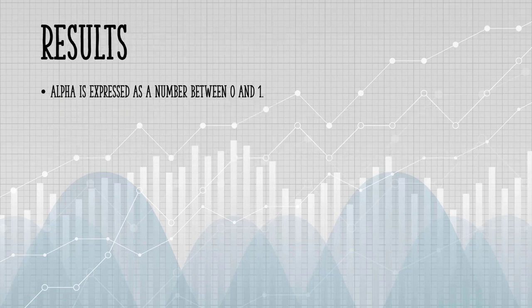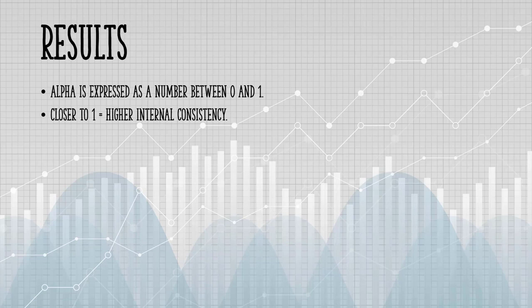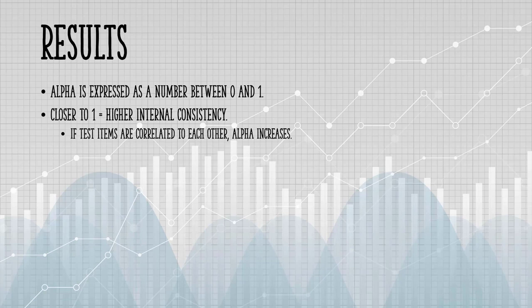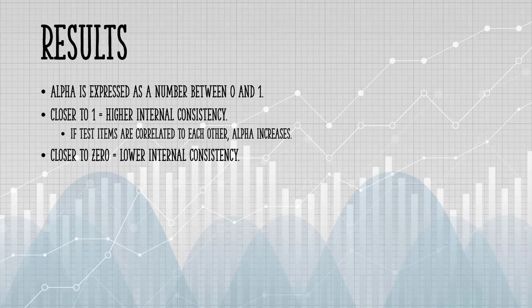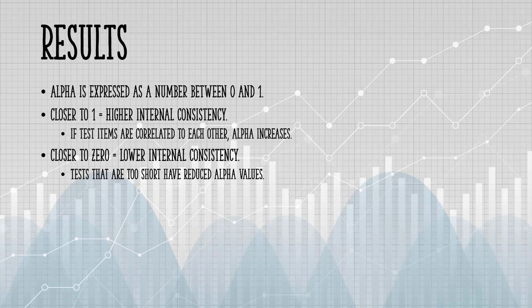Alpha is between 0 and 1. The closer your result is to 1, the higher the internal consistency. If test items are correlated to each other, alpha will increase. So the closer you are to 0, the lower the internal consistency. The length of the test does affect alpha. If your test is too short, your alpha level will be reduced. Lengthening the test may increase the alpha level.